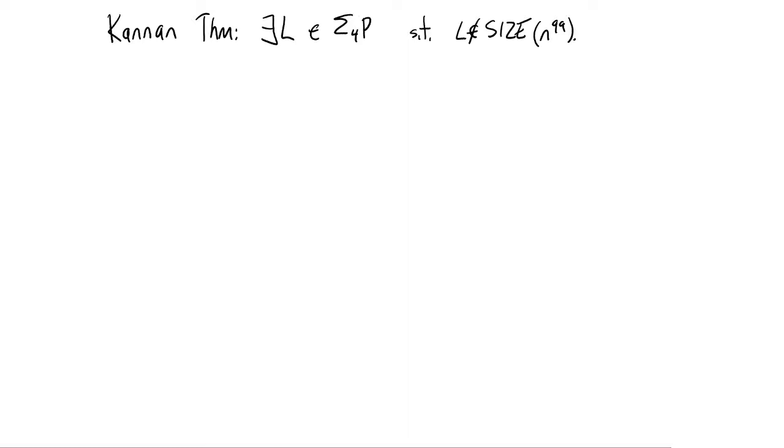The thing that I wanted to tell you now is actually a strict improvement on Kannan's theorem. How does it improve? It improves on it by getting this class sigma 4P down to sigma 2P. So it shows there's a language at a lower point in the hierarchy, sigma 2P, which does not have circuits of size n to the 99.